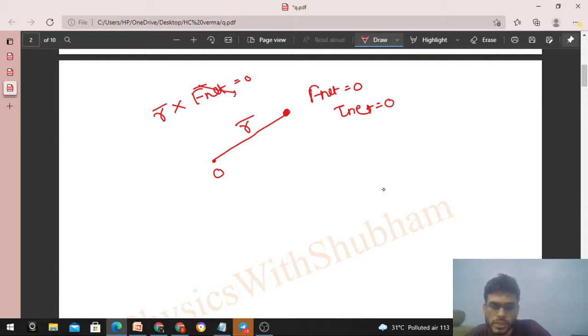So if net force is zero, then net torque will also be zero. Net torque is nothing but the torque of F net. As we discussed before, for all the forces acting, we can find the net and then calculate the torque of that net force. So if net force itself is zero, then its torque will also be zero.